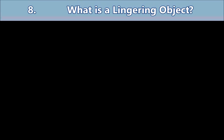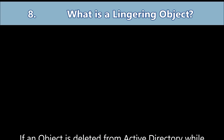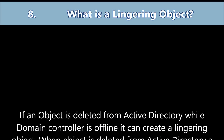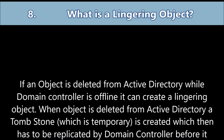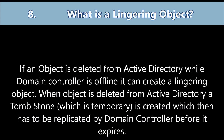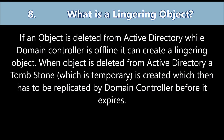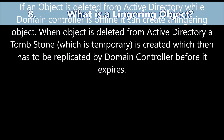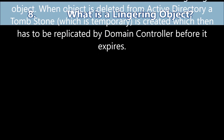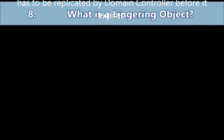Question number eight: What is a lingering object? If an object is deleted from Active Directory while the main controller is offline, it can create a lingering object. When an object is deleted from Active Directory, a tombstone — which is a temporary file — is created, which then has to be replicated by the main controller before it expires.